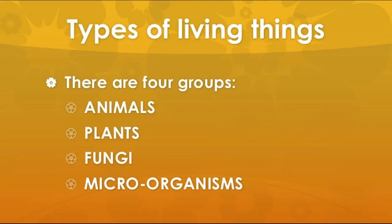Types of living things: four major groups — animals, plants, fungi, microorganisms.